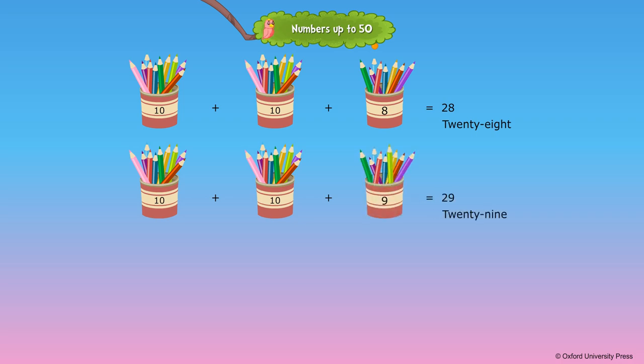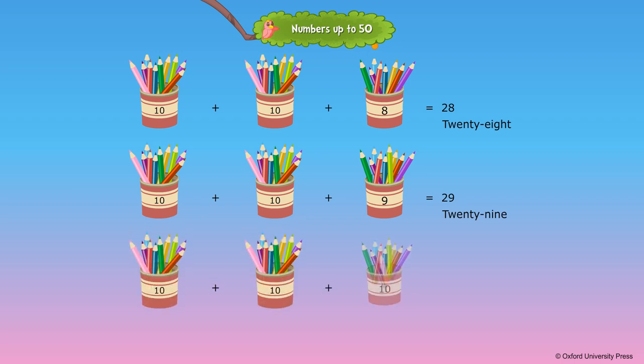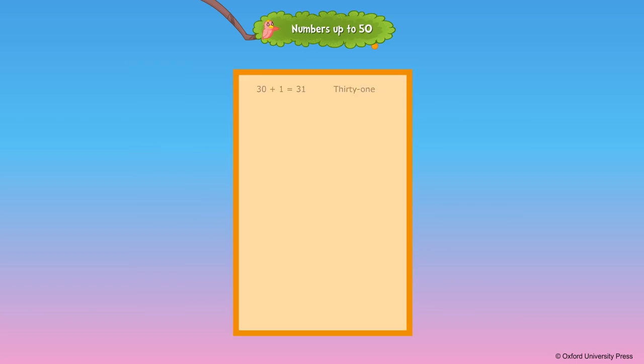20 plus 9 is equal to 29. 20 plus 10 is equal to 30.